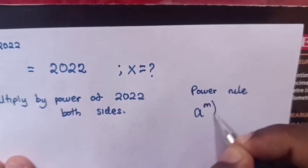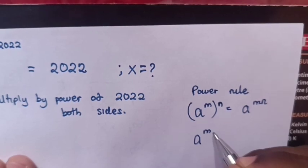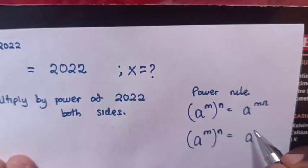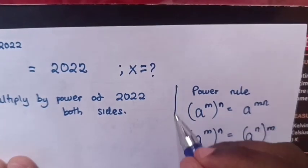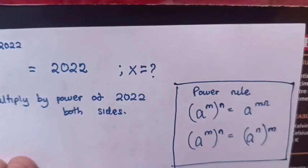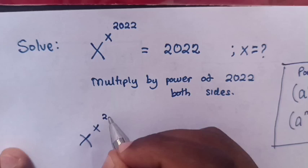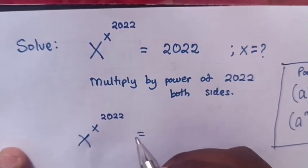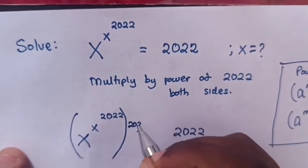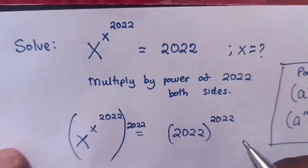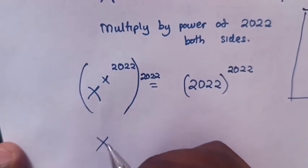The rule is: a power m, bracket power n, equals a power m·n. Also, a power m bracket power n equals a power n bracket power m — so the powers exchange inside the bracket. Now multiplying by power of 2022 on both sides: x power of x power of 2022 equals 2022, multiplied by power of 2022 on both sides.